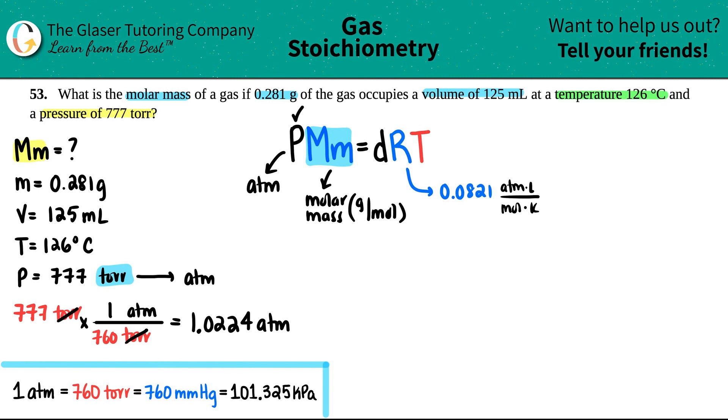Okay. So we have pressure. We're looking for the molar mass. D stands for density. And the T is temperature, right? That's Kelvin. So, oh boy. They gave it to us in Celsius. I feel like they're always going to give it to us in Celsius. But we got to convert to Kelvin.